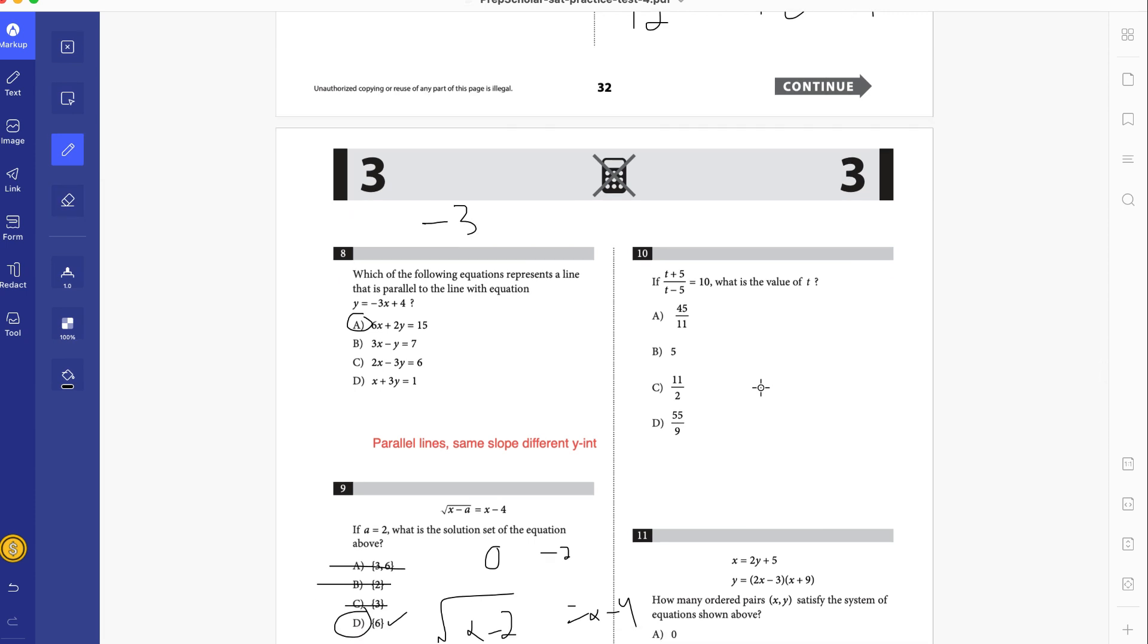Number 10. If T plus 5 over T minus 5 equals 10, what is the value of T? So what we're going to do is distribute to both sides. So we have T plus 5 equals 10T minus 50. Add 50 to both sides. That's 90, so from the looks of it, D. Alright, so boom. That's really it. That's all we have to do for this problem set.